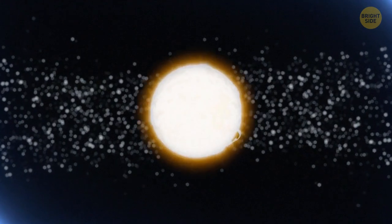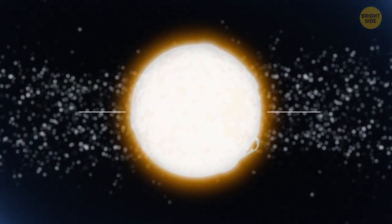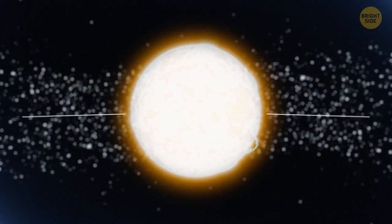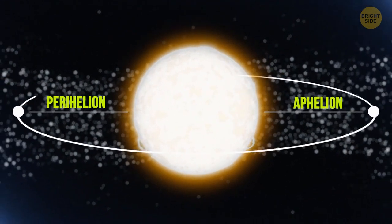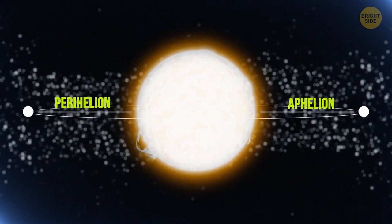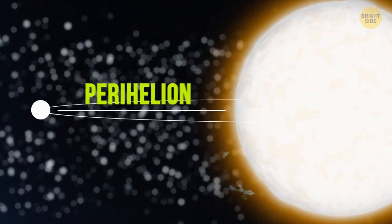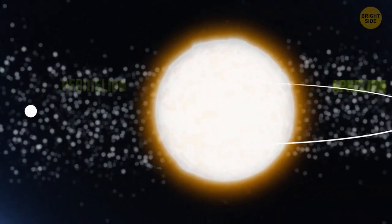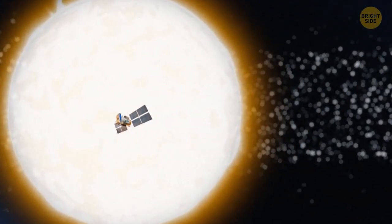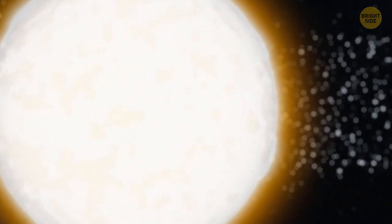The Parker Solar Probe was constantly moving between two points: the perihelion and aphelion. Look, here's the sun, and here's the probe's orbit in the shape of an ellipse. The closest point to the sun is the perihelion. The sun was pulling the probe there at an incredible speed. At this point, the probe began to move away from the star.